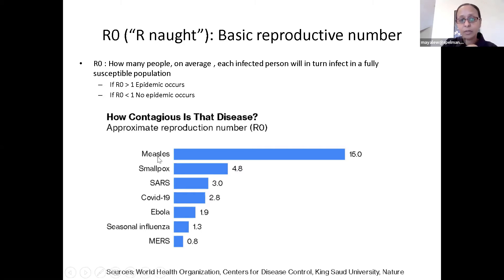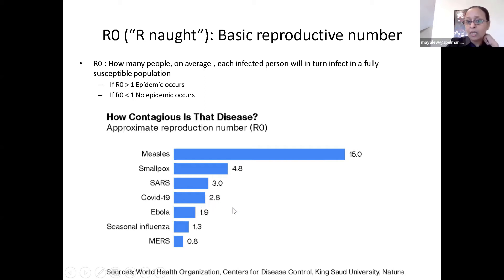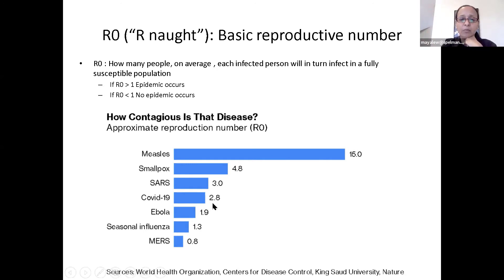One of the most notorious diseases for spreading is measles — one person typically infects 15 others, leading to very rapid spread assuming nobody is vaccinated. Luckily most people are vaccinated against measles, so we don't see the kinds of outbreaks that could potentially happen. COVID-19 is around 2.8, seemingly more transmissible than seasonal influenza at 1.3. At 1.3, infections are above one so there is growth, but it's less dramatic.